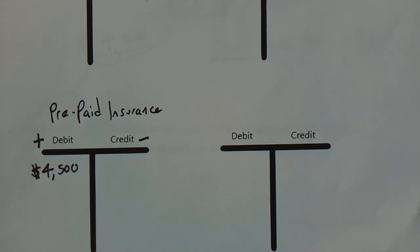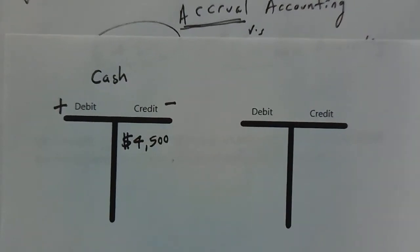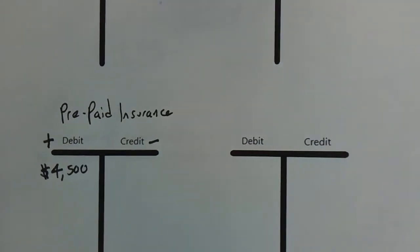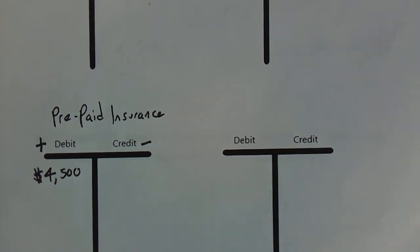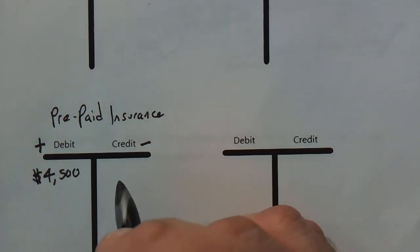We know the insurance expense is $1,500 a month. At least that's what the regular payments are according to the information we're given. So it is time to now expense the first month of insurance because it's expired — it is gone, it has been used up.